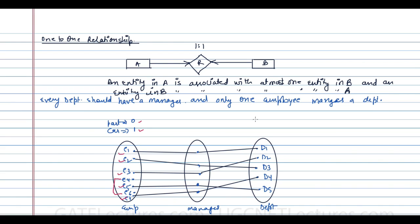The cardinality of department is one, because every department has exactly one managing employee. The participation of department is also one, since every department must participate in the relationship. So for department: minimum cardinality is one and maximum cardinality is one.